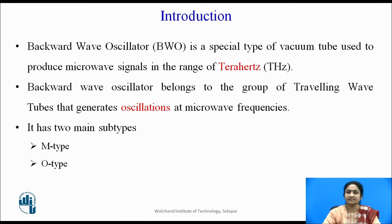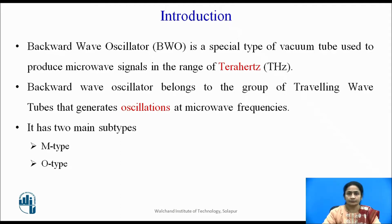The backward wave oscillator is a special type of vacuum tube which is used to produce a microwave signal in the range of terahertz. They belong to the same group as the TWT — traveling wave tube — that generates oscillations at microwave frequency. There are two types of backward wave oscillator: M-type and O-type.